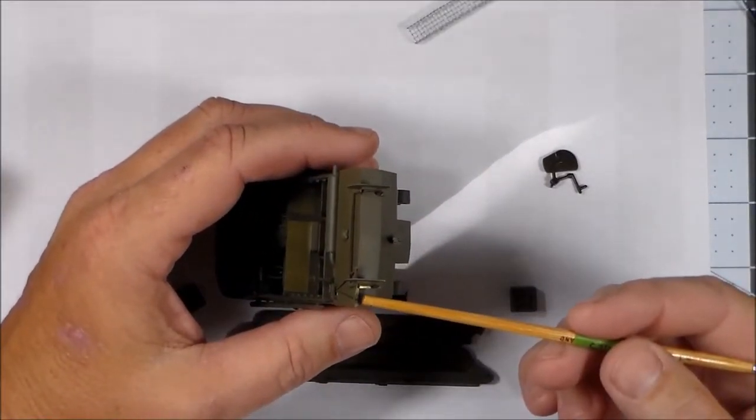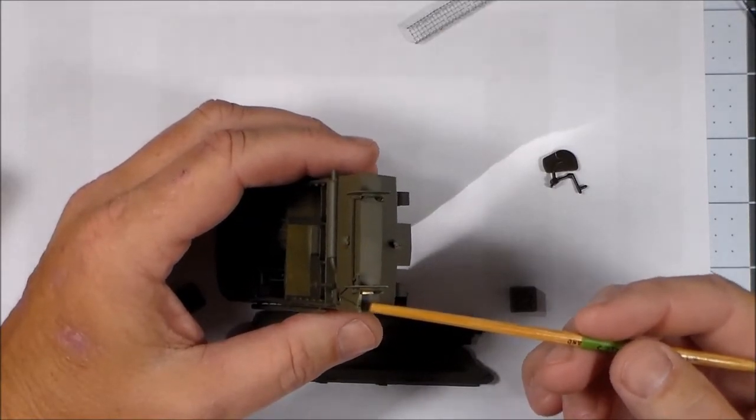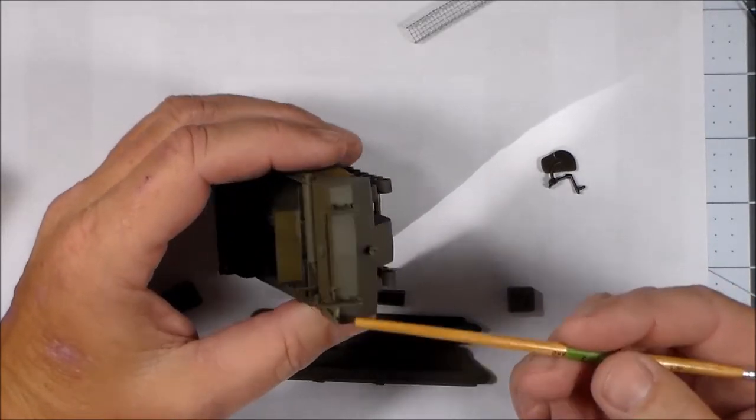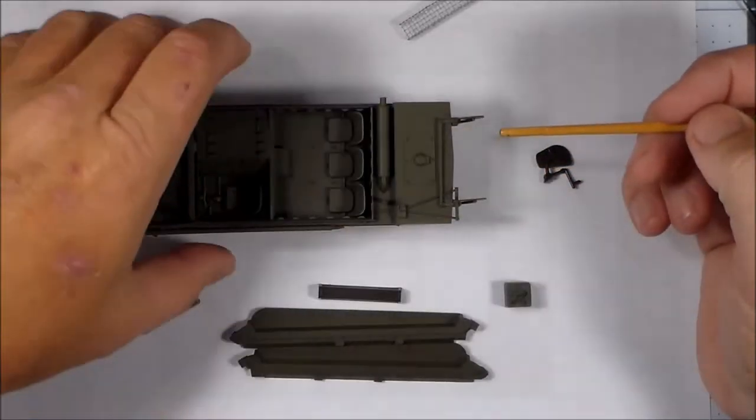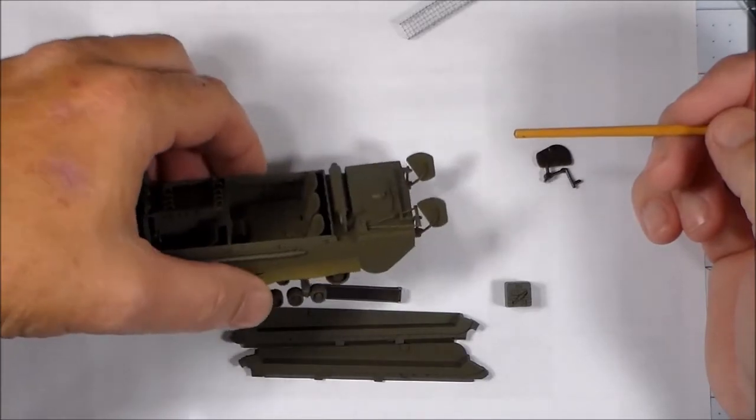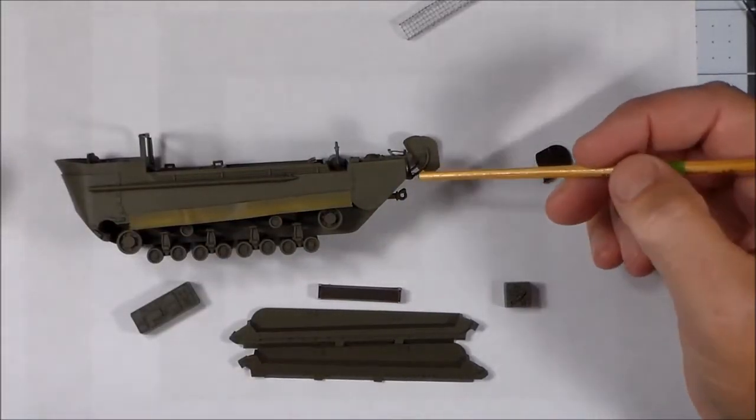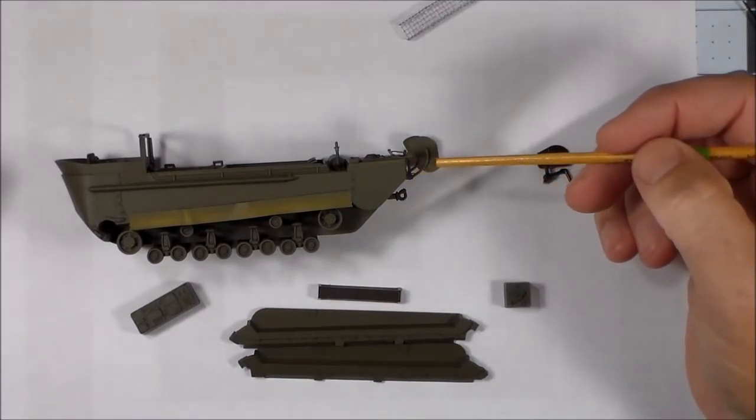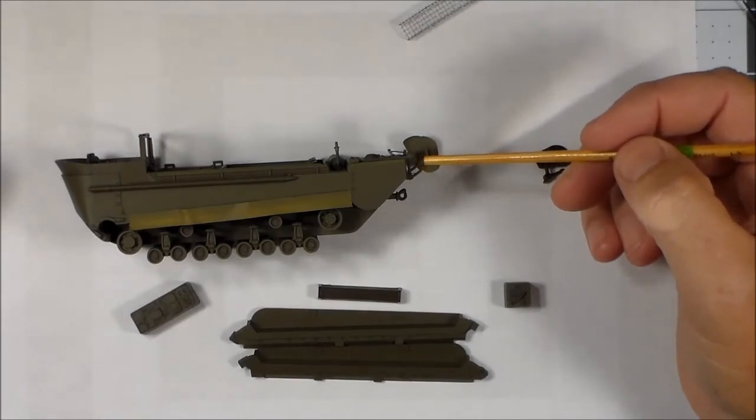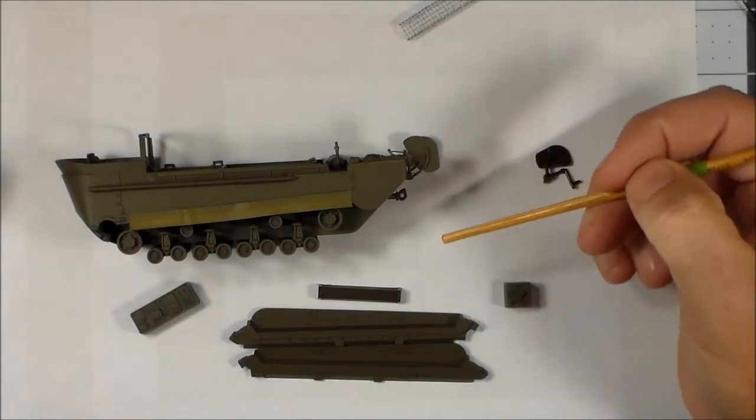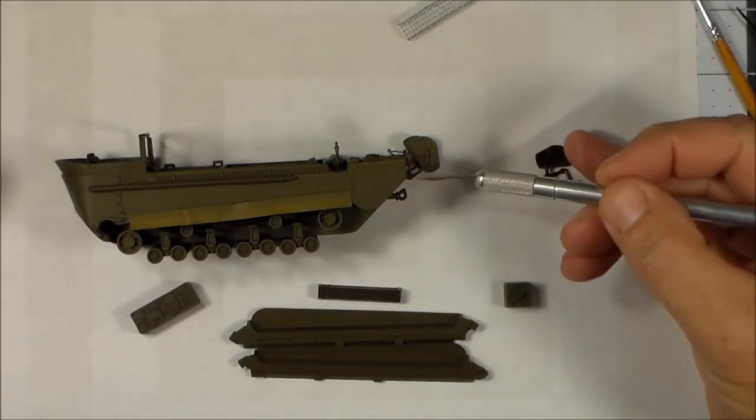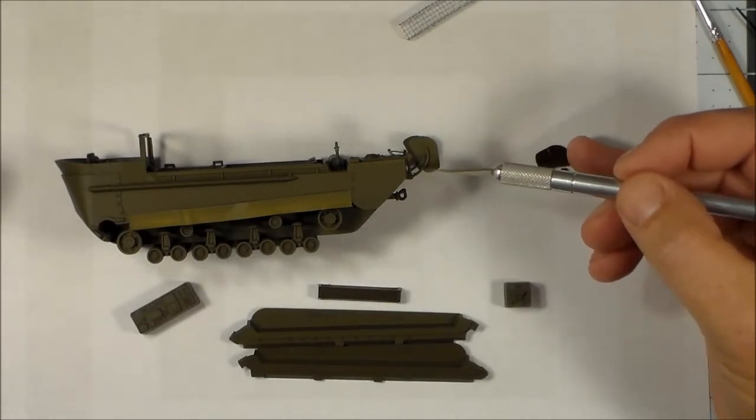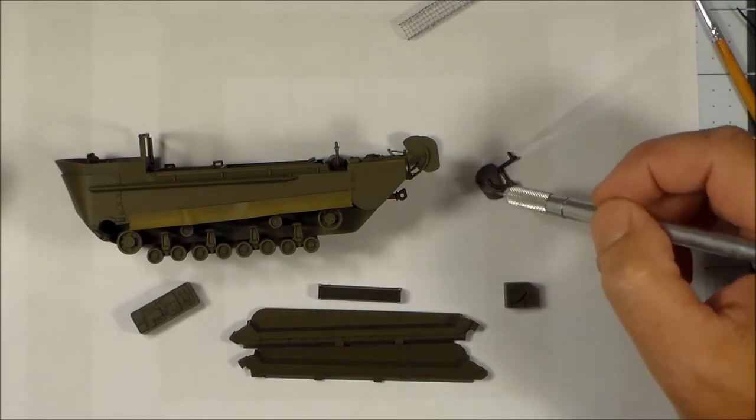I just basically got some Evergreen sheets, cut them into strips of an appropriate width, bent them to shape to make all the control linkage. Then I used, on this part right here where the rod goes through, I just used some leftover photo etched fret, cut that, rounded it, drilled some holes, and made a bracket for the rod to go through. Then I got some more plastic, cut that down, rounded it. I'm going to install - I almost forgot - but I need to install some little bolt heads on the inner and outer edge of these parts here.